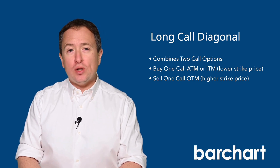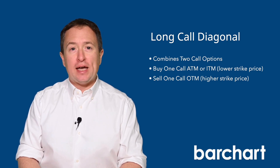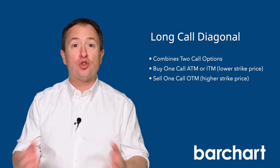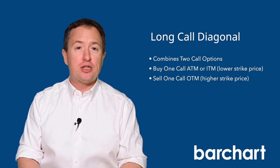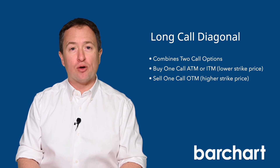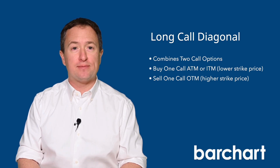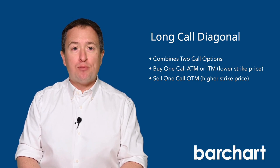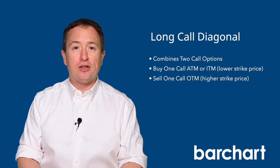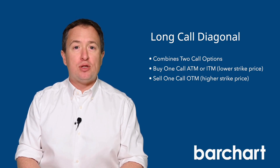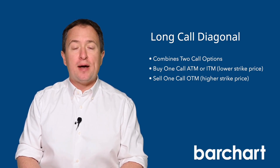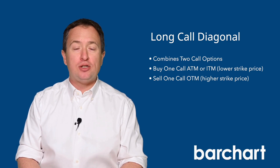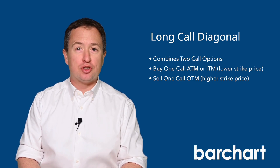The goal is for the underlying asset's trading price to increase over time and for the short option to expire worthless. The maximum profit on a long call diagonal is the difference between the two strike prices minus the net debit paid to establish the trade.